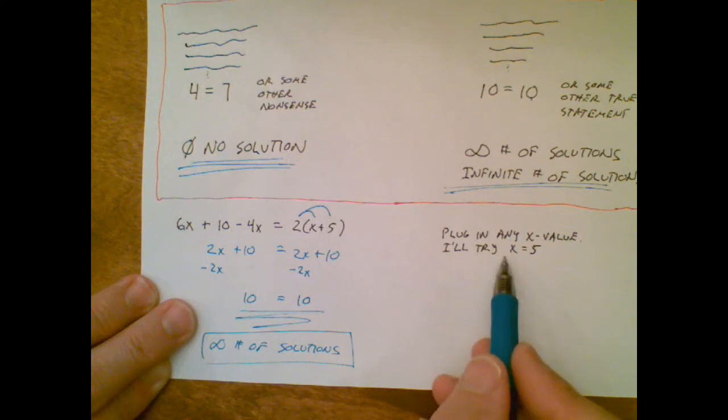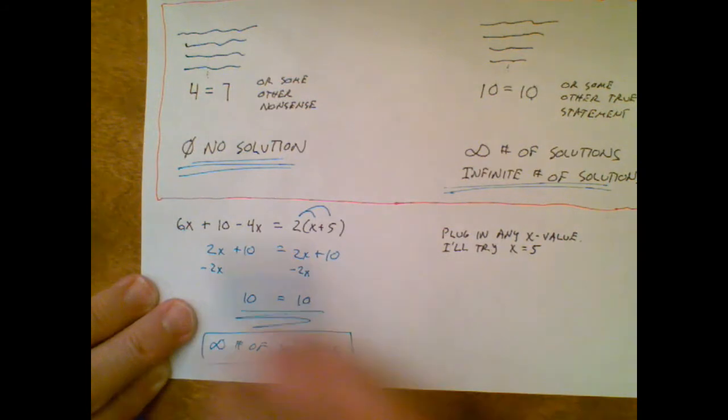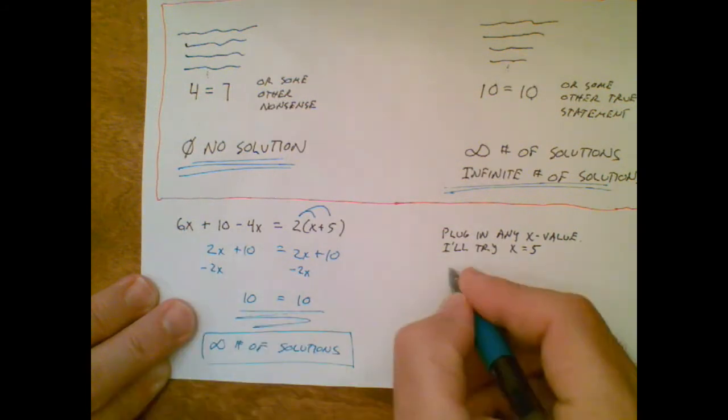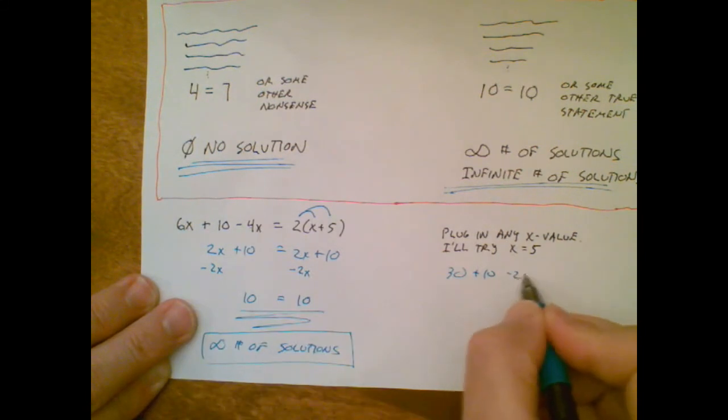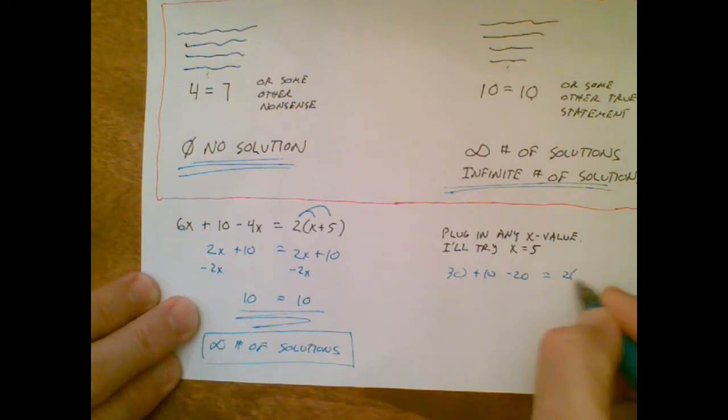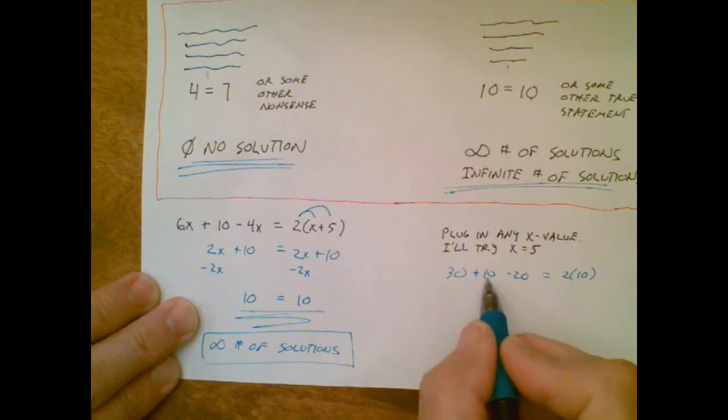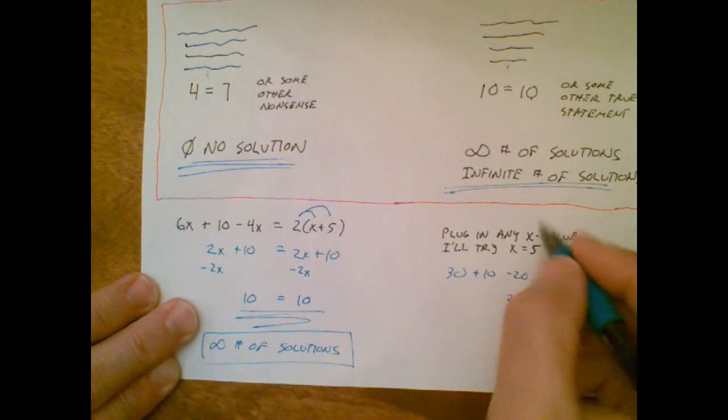That means any x value in the entire world will work. Just to show you once again, I'll plug in a 5 into this, but I'm going to do it with little mental math. 6 times 5 is 30. 4 times 5 is 20. If I put a 5 in here, that's a 5 plus 5, or a 10 in the parentheses.